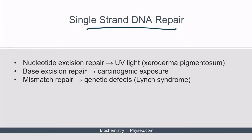There are three major types of single-strand DNA repair you need to know for Step 1: nucleotide excision repair, base excision repair, and mismatch repair. Nucleotide excision repair usually occurs in response to damage done by UV light, and is associated with xeroderma pigmentosum. Base excision repair usually occurs in response to carcinogenic exposure, including nitrosamines in smoked food, tobacco in cigarettes, or arsenic. Mismatch repair is a backup repair mechanism for DNA replication and can be dysregulated by genetic defects such as Lynch syndrome.